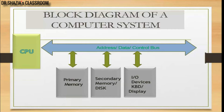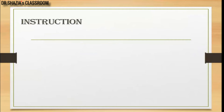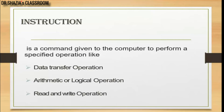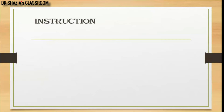So how does this entire unit actually work? When you turn on a computer, it starts executing a set of instructions from a predefined memory location. Your OS loads a program and executes it so we can see the screen or icons on your PC. Basically, an instruction is a command given to the computer to perform a specific operation — like a data transfer, arithmetic or logical operation, or a read and write operation.